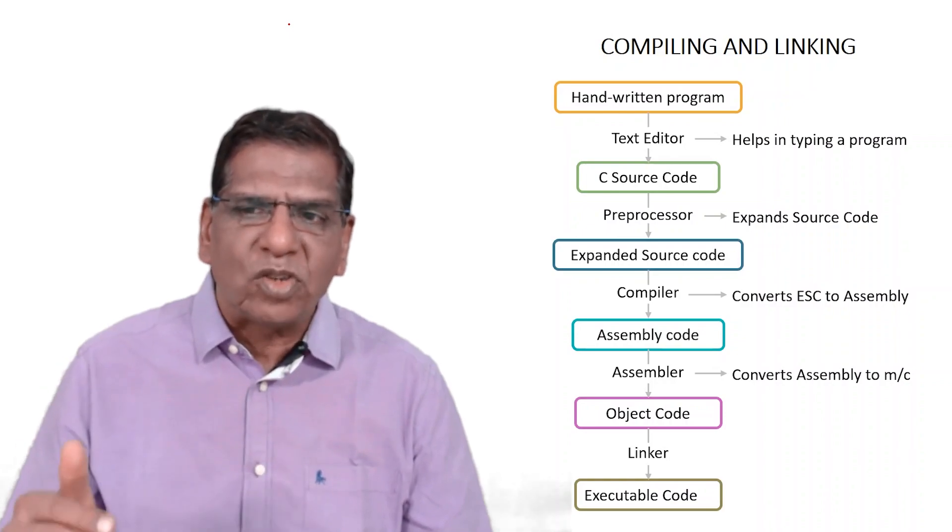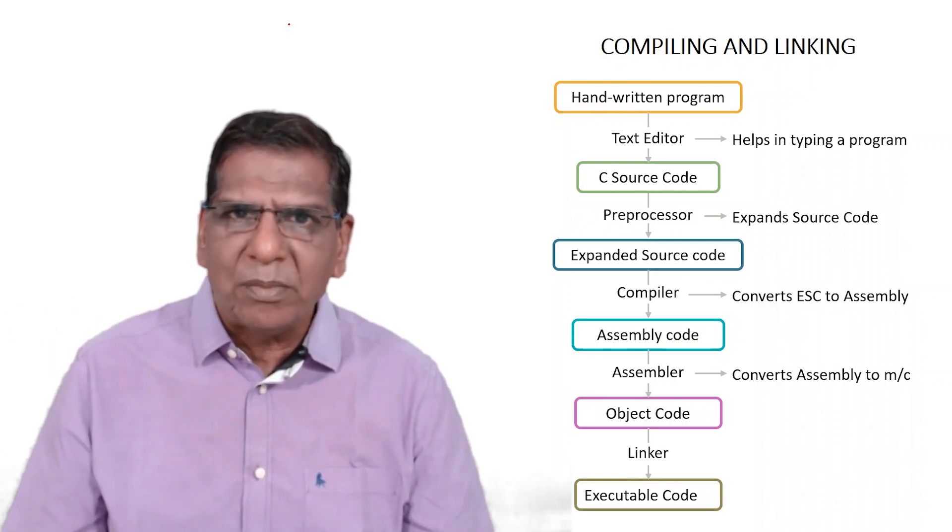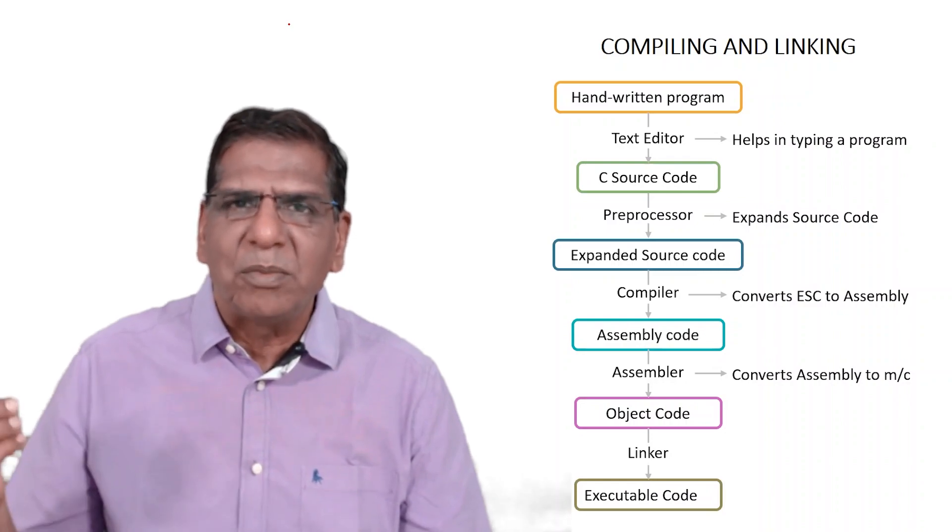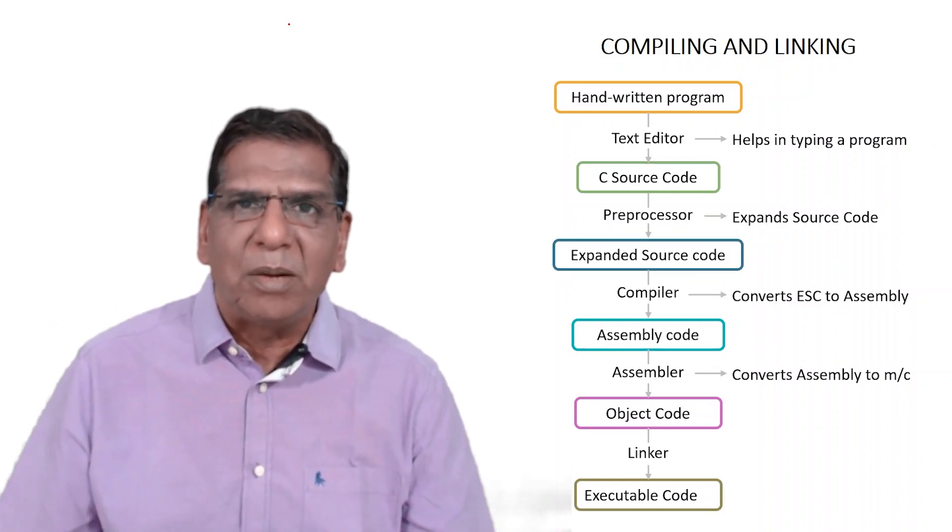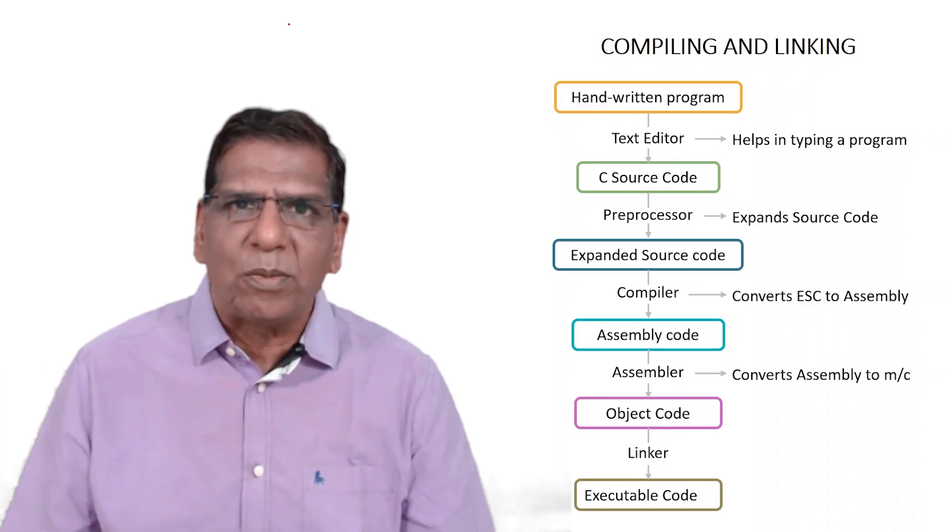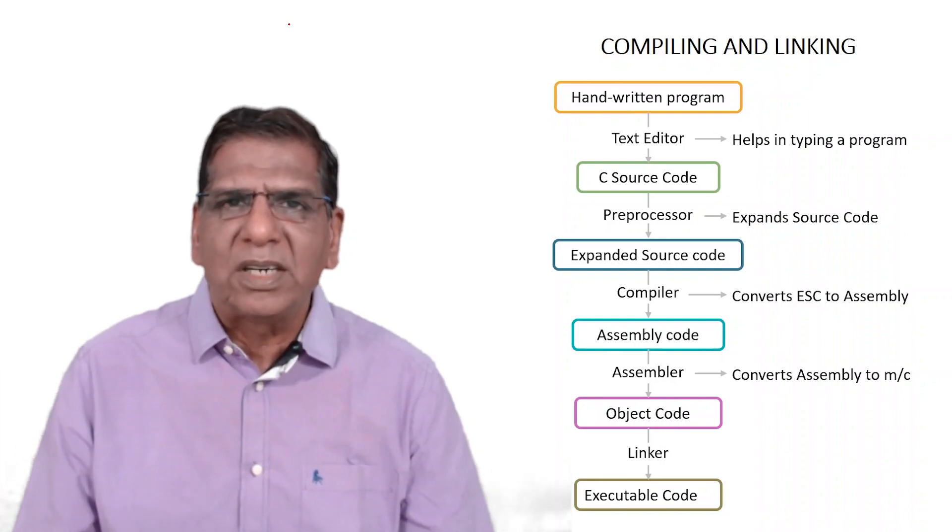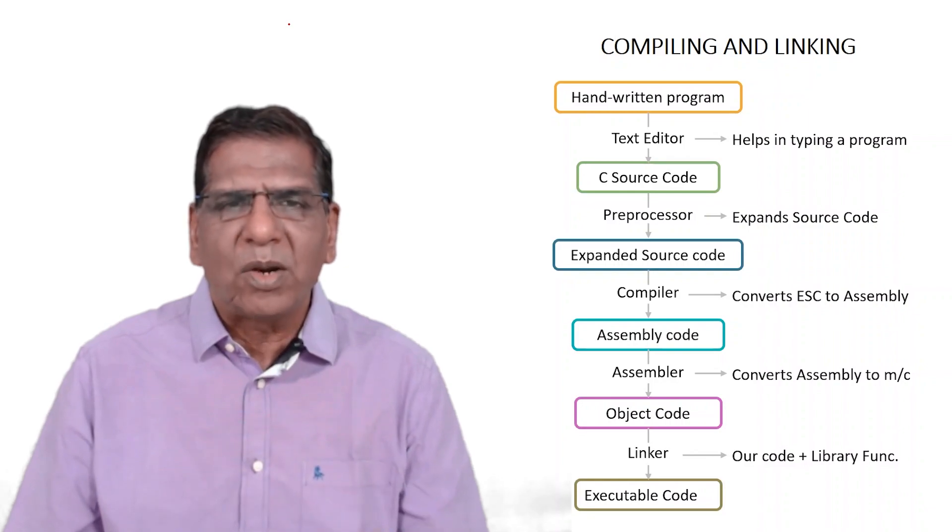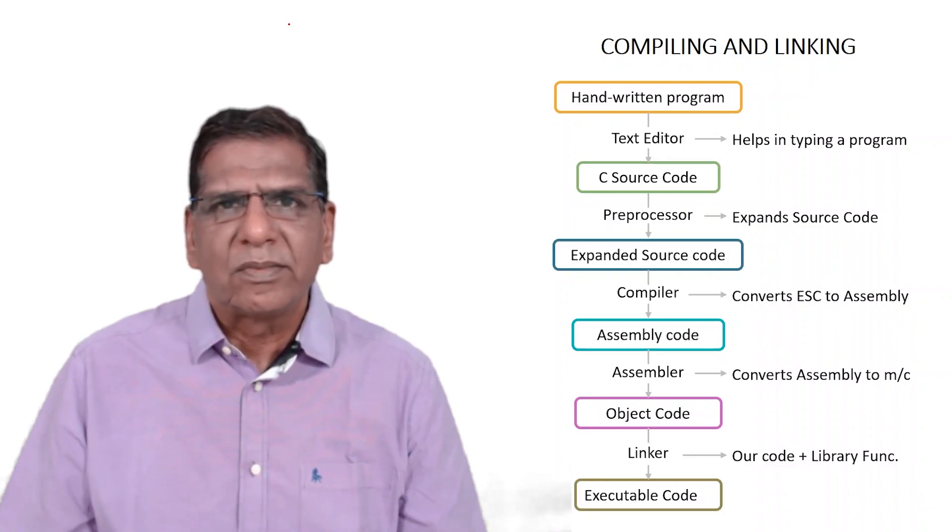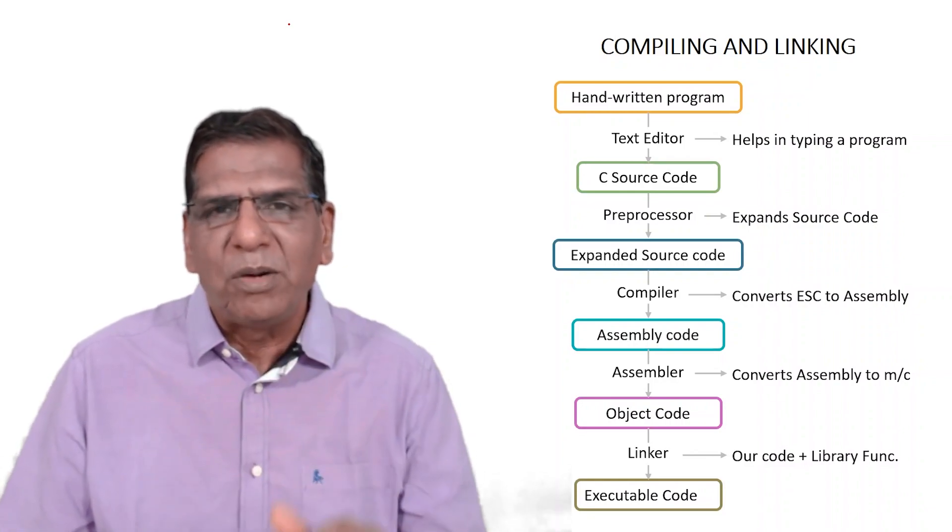Linker combines object code of our program, means machine language code of our program, with machine language code of library functions which are made available in a pre-compiled form. They are already in object code form. So the two object codes are linked together using the linker to generate what is known as executable code. That's the overall build process.